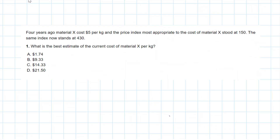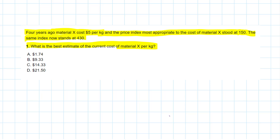Here's our third and final example, and we're going to work with ratios — specifically a price index. We have to find the best estimate for the current cost of a material. Four years ago, the cost of material X was $5 per kilo, and the most appropriate price index was 150 — similar to a consumer price index. The same index now stands at 430, which represents a lot of inflation. We can set this up as a ratio.